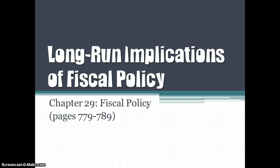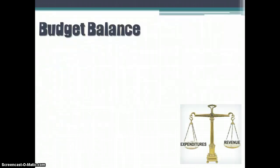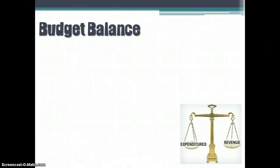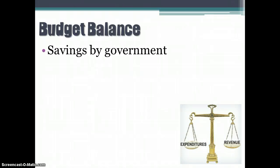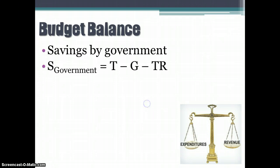When we're talking about long-run fiscal policy implications, what we're really talking about is the budget balance — is the budget in deficit or is it in surplus? Did we bring in more money than we spent, in which case it's a surplus, or did we bring in less money than we spent, in which case it's a deficit? The budget balance is simply the savings that government has during the course of the year. If it's positive, it's a surplus; if it's negative, it's a deficit.